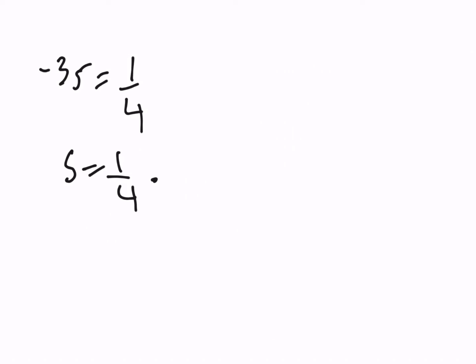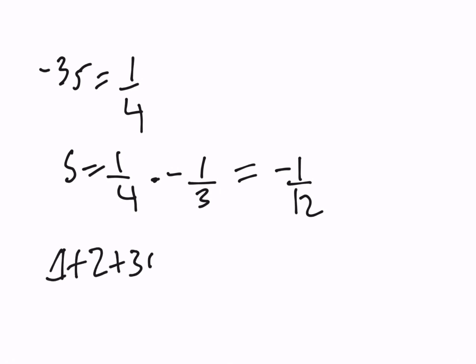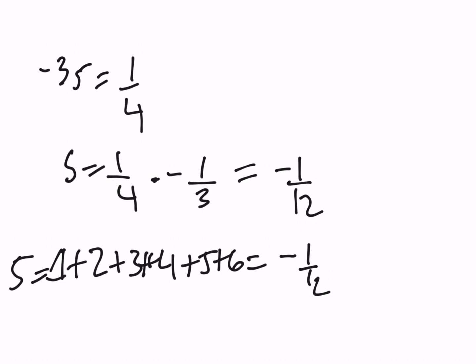So now that we know that, we can take the equation negative 3S equals 1/4 — since the Grandi series squared equals 1/4 — and by simple algebra, dividing both sides by negative 3, we get S equals 1/4 times negative 1/3, which equals negative 1/12. So our equation for 1 plus 2 plus 3 plus 4 plus 5 plus 6 and so on is actually negative 1/12. I know some people have already done videos on this, but I just want to bring my own explanation and bring awareness to this interesting result. Thank you.